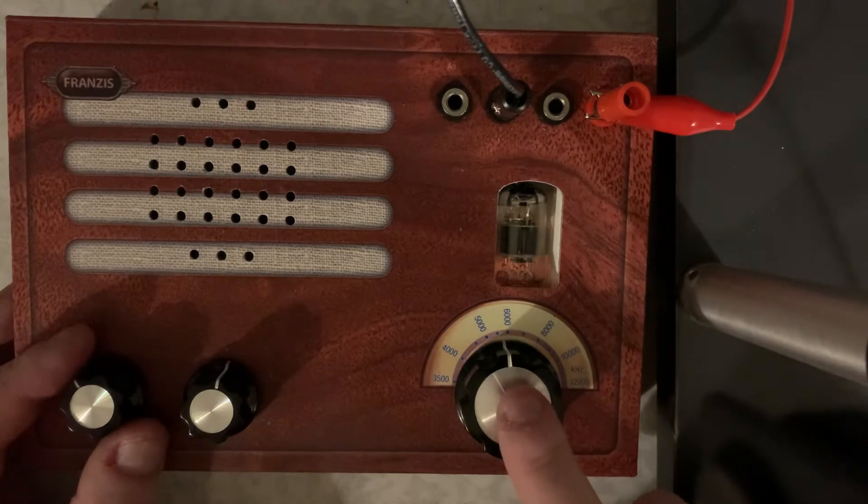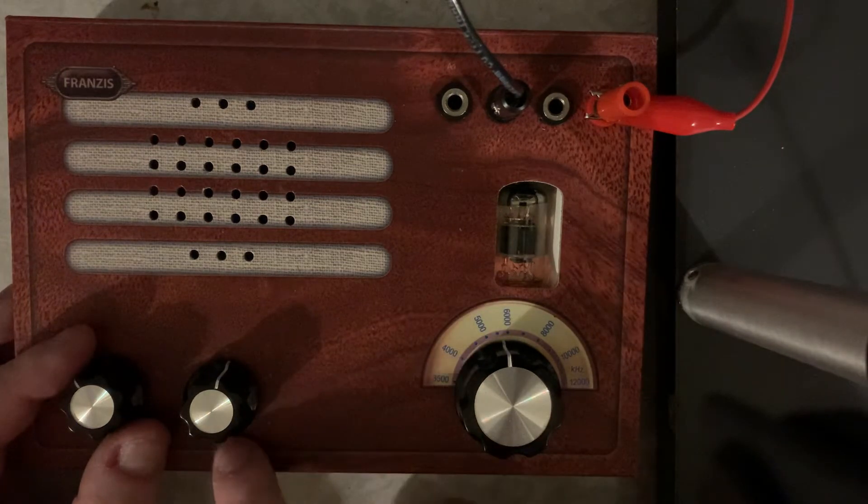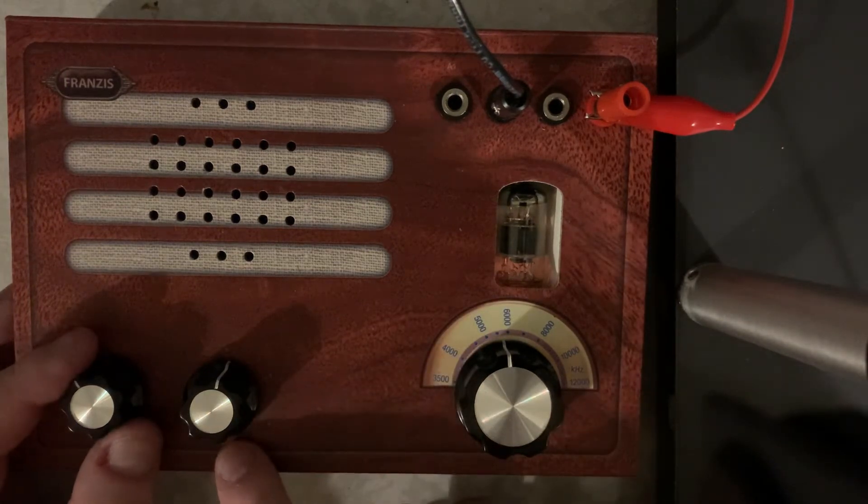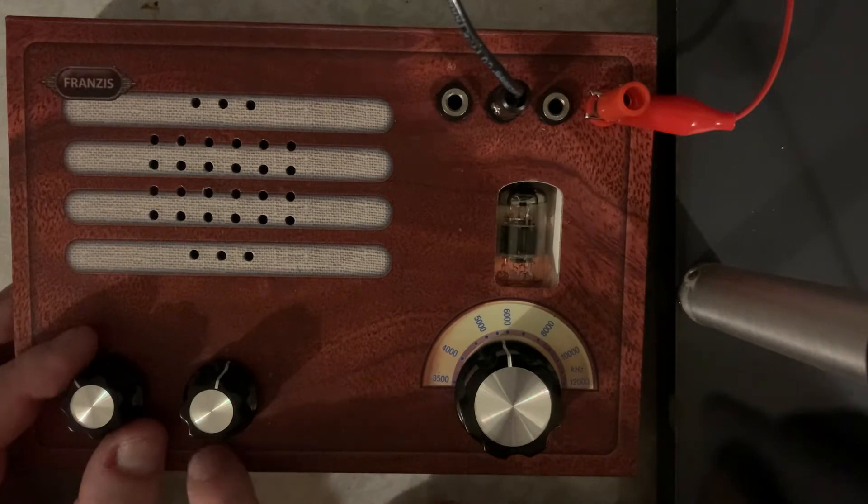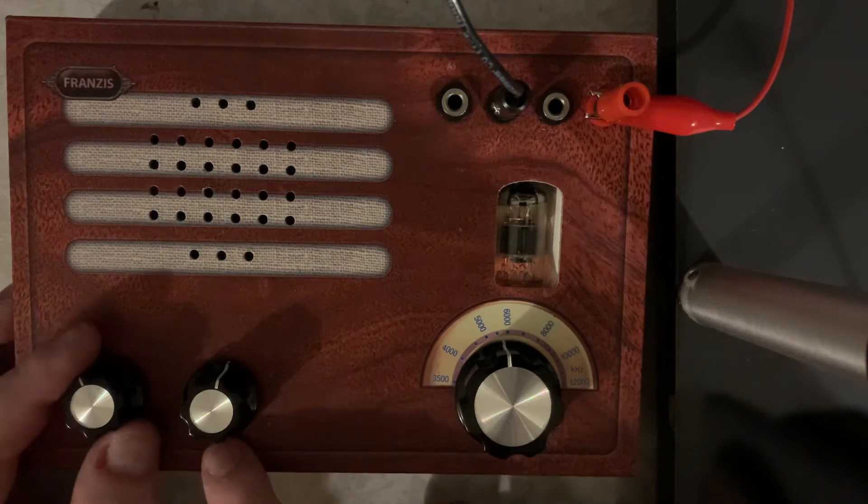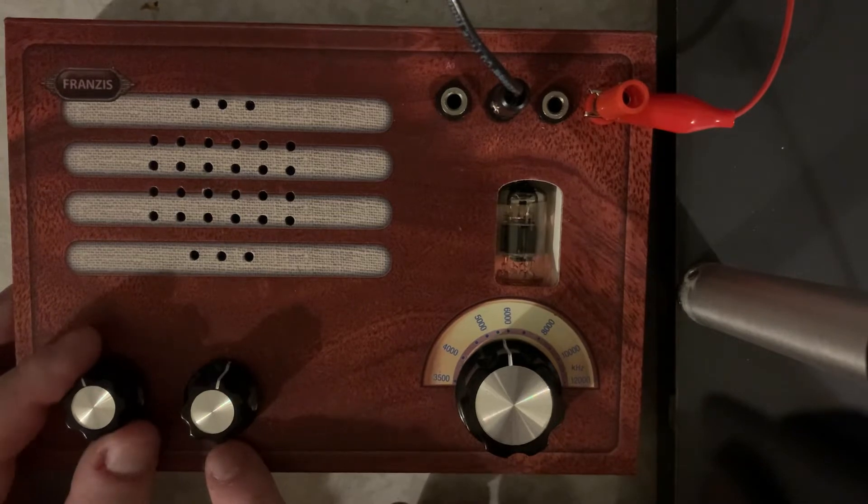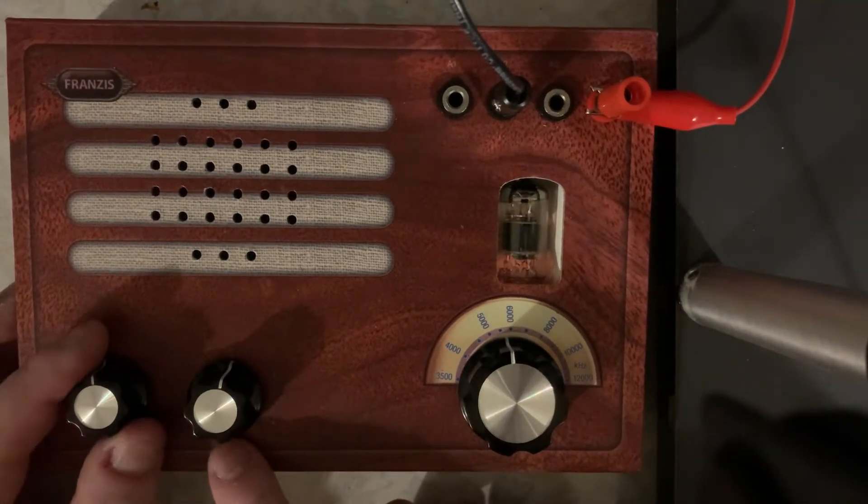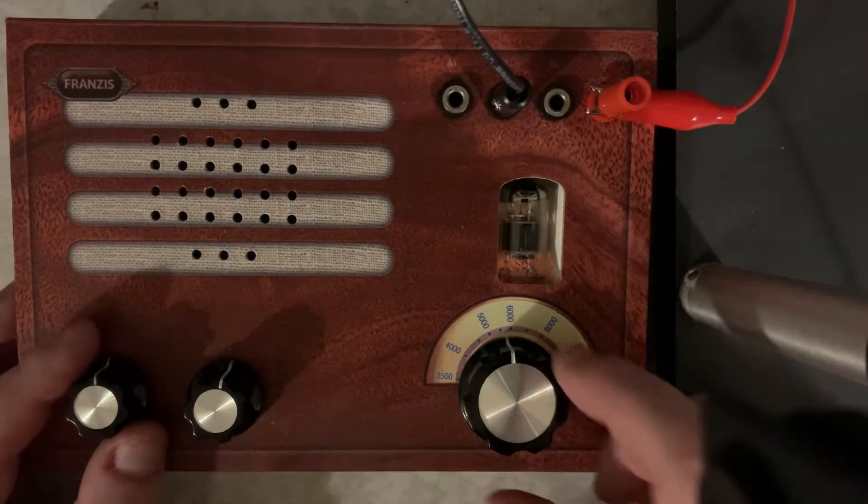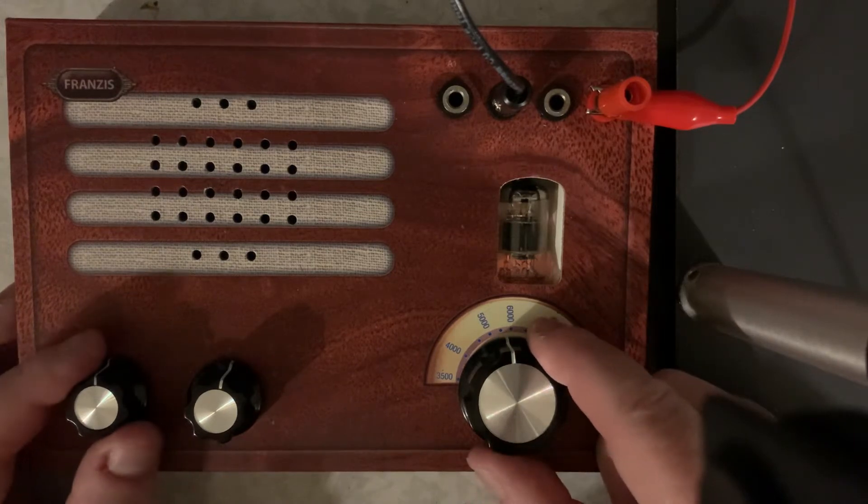So here we have, of course, the tuning knob. Over here is the fine-tuning knob, which essentially is just a way to pull in the signals a little bit better, like a BFO knob, a beat frequency oscillator. So I'm just going to try to tune around a little bit and see what else we can find.